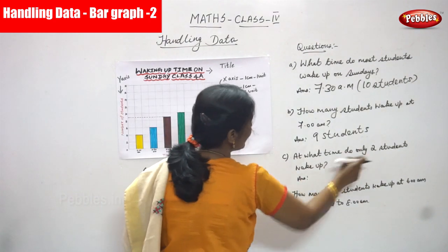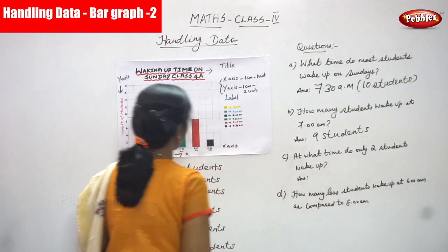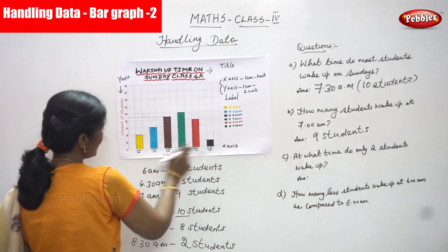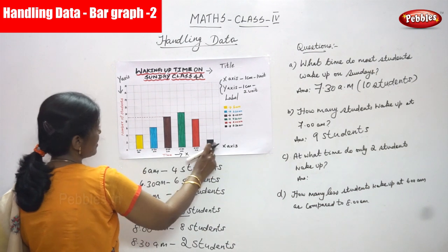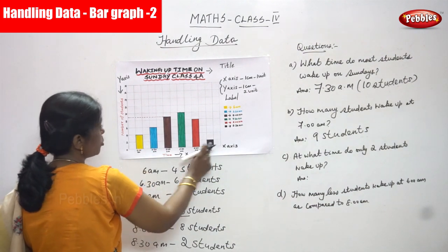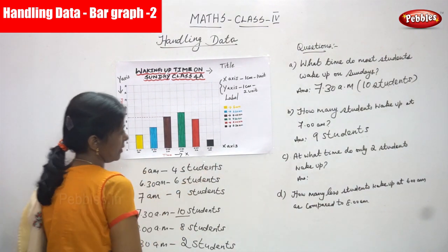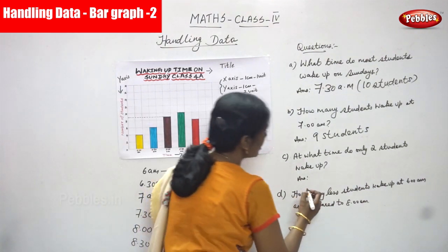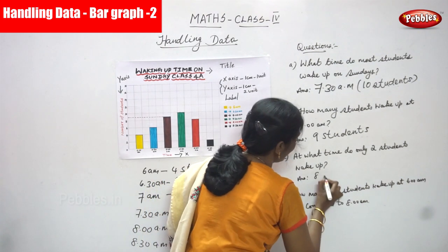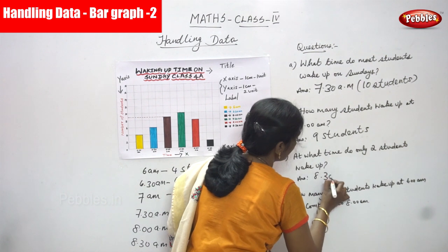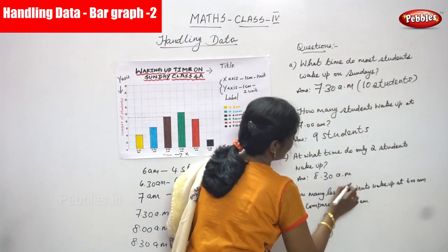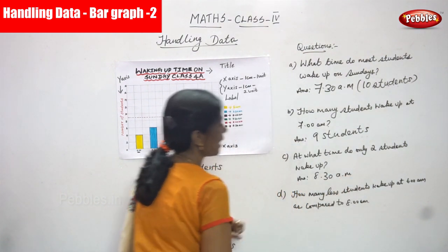At what time do only 2 students wake up? 2 students — that is very clearly mentioned. It is 8:30 a.m. Only 2 students wake up at 8:30 a.m.